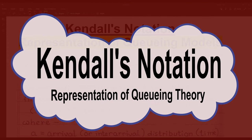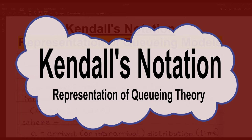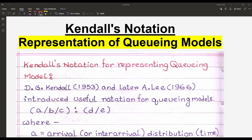Hello friends, today our topic is Kendall's notation for the representation of queuing models. In previous videos on queuing theory, we have discussed the structures, elements, and different types of components of queuing theory. D.G. Kendall in 1953 first introduced the queuing theory notation, and after that, A. Lee in 1966 introduced the complete and useful notation for the queuing model.